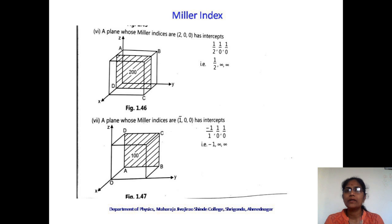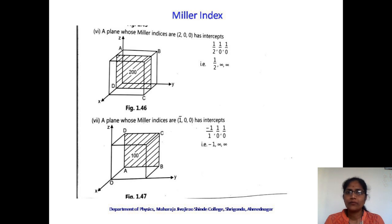Next is a plane whose Miller indices are (2 0 0). This plane cuts the x axis at 1/2 a, and y and z axes have no intercept. Taking reciprocals: 1/2 along x axis, 1/0 = infinity along y axis, and 1/0 = infinity along z axis. So intercepts are 1/2, infinity, and infinity along x, y, and z axes. Draw and show this plane as indicated in the figure — it represents the (2 0 0) plane.